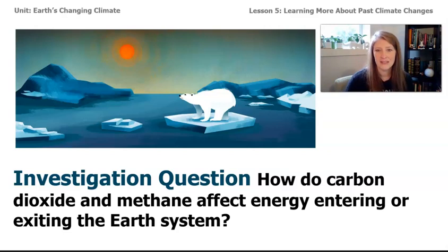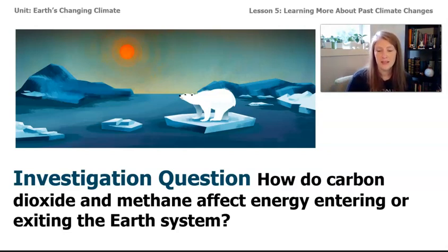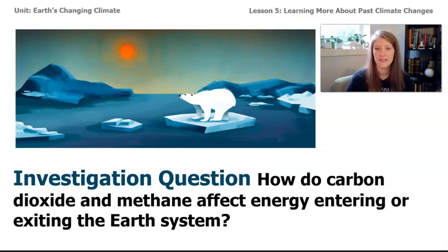In the last lesson, we saw that the amount of energy coming into the system can affect the global average temperature and how ice might melt or grow on Earth's surface. But specifically, what does methane do to change the amount of energy coming in or going out? And what does carbon dioxide do to the same effect? That's what we're trying to figure out.